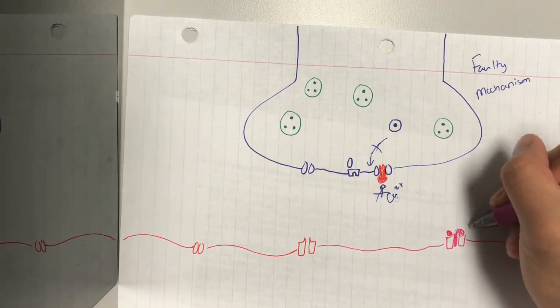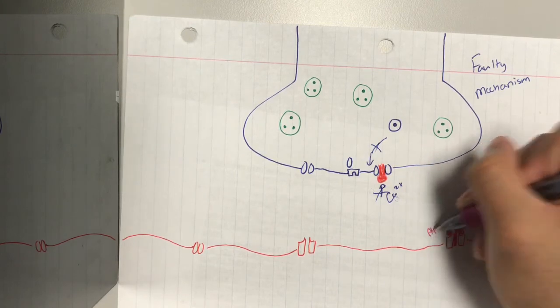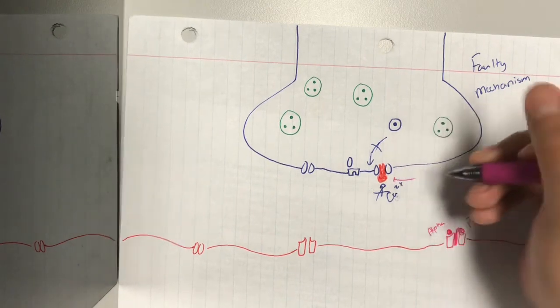And the last type of conotoxin that there is, oh, I need to label these. This is psi, and this is alpha.